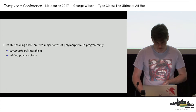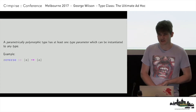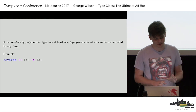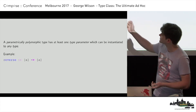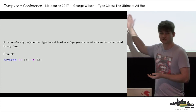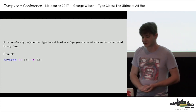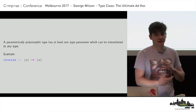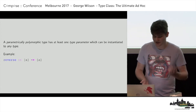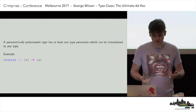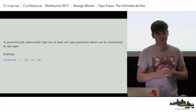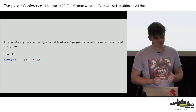A parametrically polymorphic type has at least one type parameter which can be instantiated to any type — any type in the universe. Here I've given an example in Haskell: a type signature for a function called `reverse`. It takes a list of As and produces a list of As. A is parametrically polymorphic — A could be instantiated to any type. So I could reverse a list of integers, a list of strings, a list of whatever else I have lying around, a list of bananas. The reverse function doesn't care what's in the list — all it does is reverse their ordering.